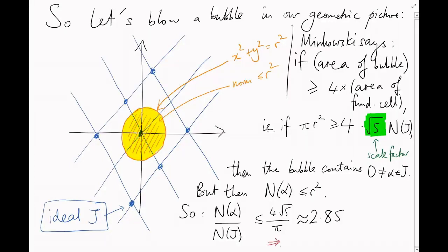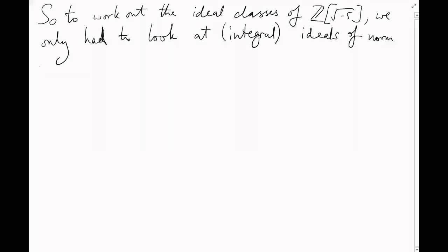But actually, it's not hard to see that the norm of alpha over the norm of j must be an integer. So it's actually bounded above by 2. This means that in order to work out the ideal classes of Z adjoin root minus 5, we only had to look at ideals of norm at most 2.